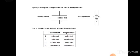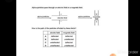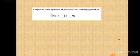Alpha particles pass through an electric field or magnetic field — how is the path of the alpha particles affected by these fields? Alpha particles are charged particles, so they are deflected by both electric field and magnetic field. Option A is correct.